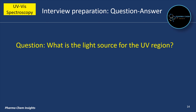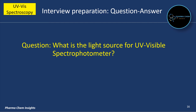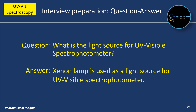What is the light source for the UV region? The light source for the UV region is a deuterium lamp. What is the light source for the visible region? A halogen lamp is used as a light source for the visible region. What is the light source for UV visible spectrophotometer? A xenon lamp is used as a light source for a UV visible spectrophotometer.